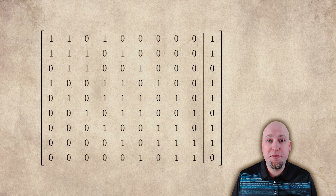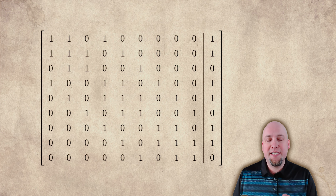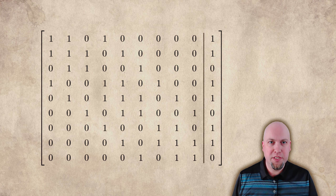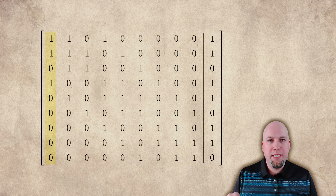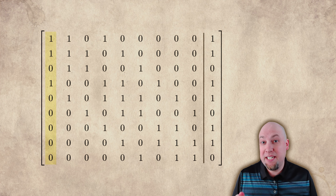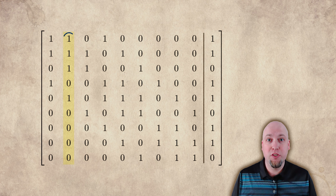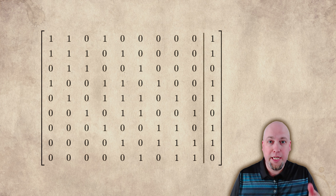Let's go through the details of solving this linear system. When we throw this into a matrix, every column corresponds to one of the nine vectors. The first column has a one in the first, second, and fourth entries — because pressing the first button toggles the first, second, and fourth lights. Similarly, the second column has ones in the first, second, third, and fifth entries, and so on for all nine columns.